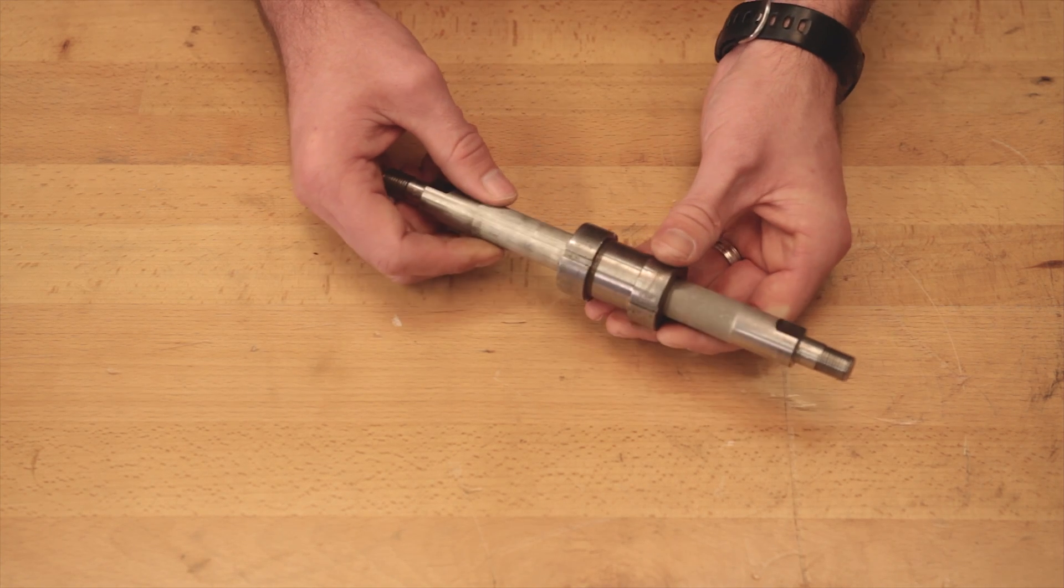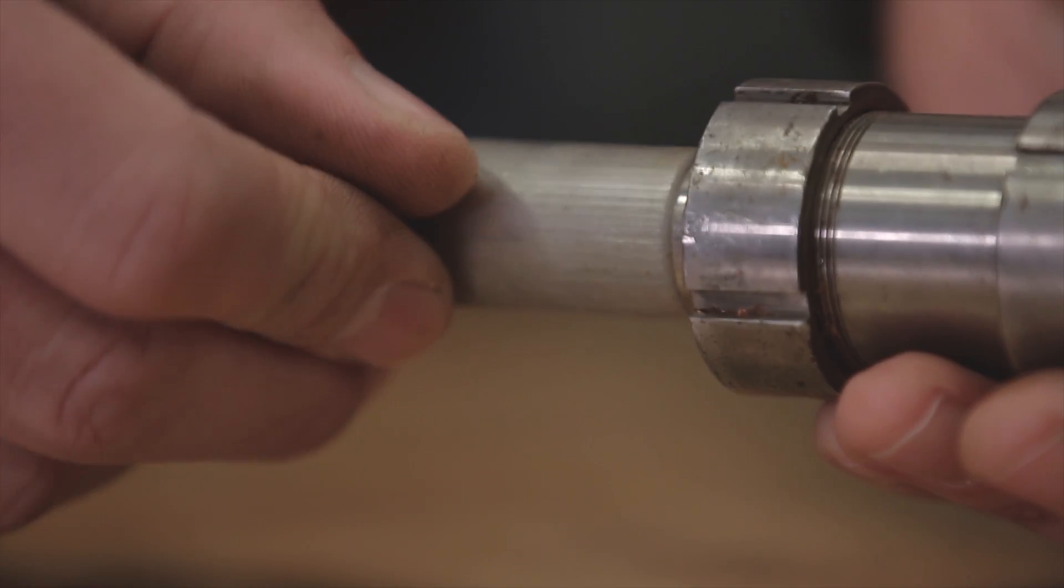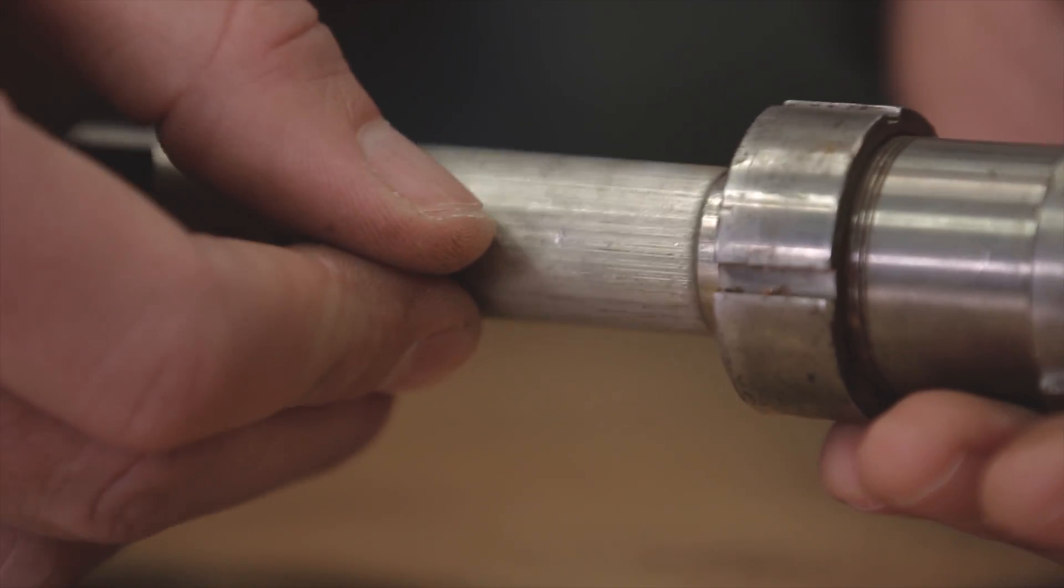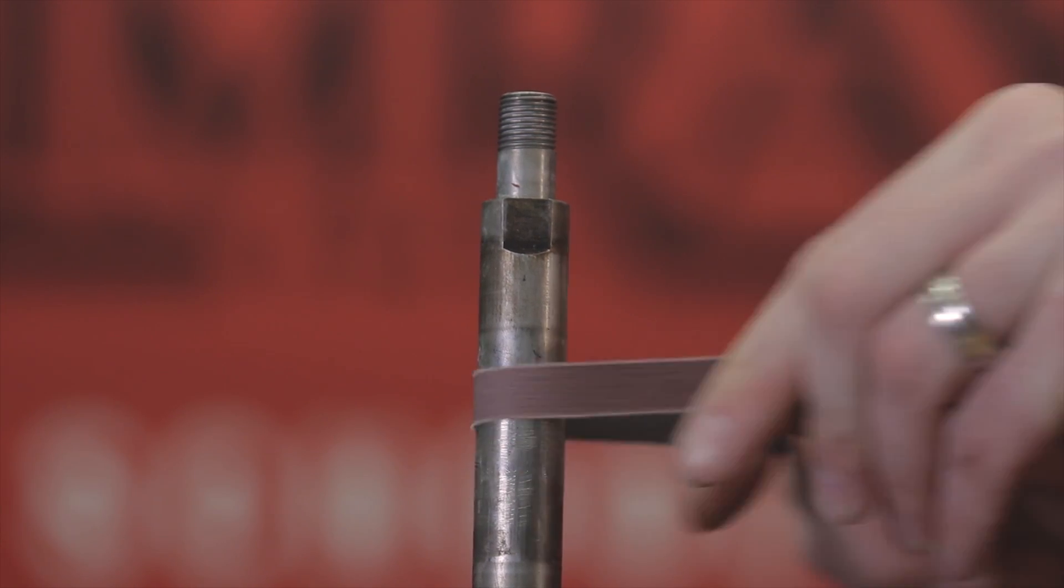First, check your piston rod for any scratches or scoring. If you can feel the scoring with your fingernail, the piston rod needs to be replaced. But if it only has light scratches, sometimes they can be smoothed out with 220 grit or finer emery cloth.